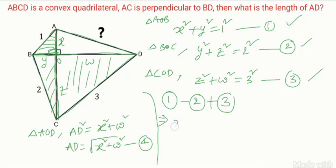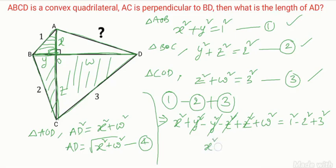So what will come? X square plus Y square, here minus, second equation minus you apply, so minus Y square minus Z square. Third equation you can take, Z square plus W square. X square plus W square is equal to 1 minus 4 plus 9, so 6 coming.